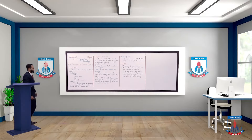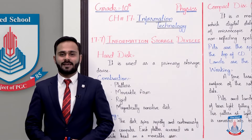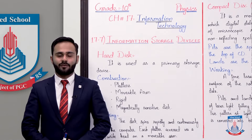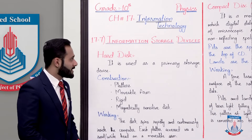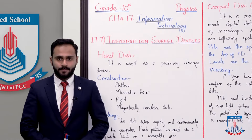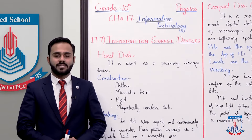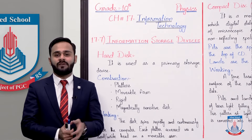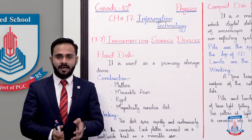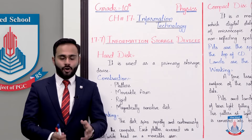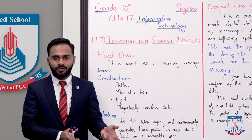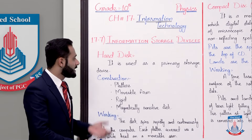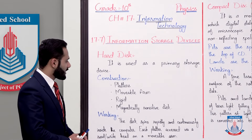Chapter number 17, Information Technology, and the topic is 17.7 Information Storage Devices. The first device is hard disk. Hard disk is also a storage device, aur isko hum computer ki primary storage device ki taur par istamal karte hai. Normally ye computer me built-in hoti hai, ya chassis me connected hoti hai, ya phir isko externally connect kiya jata hai computer me.